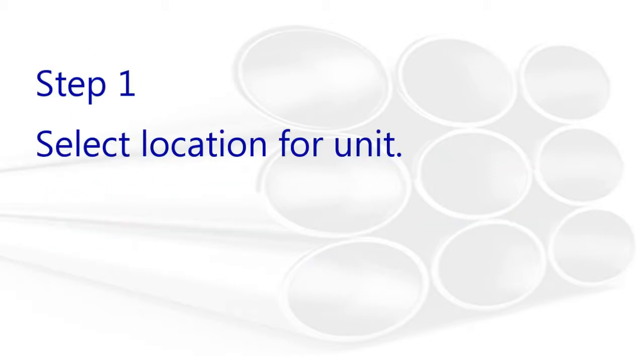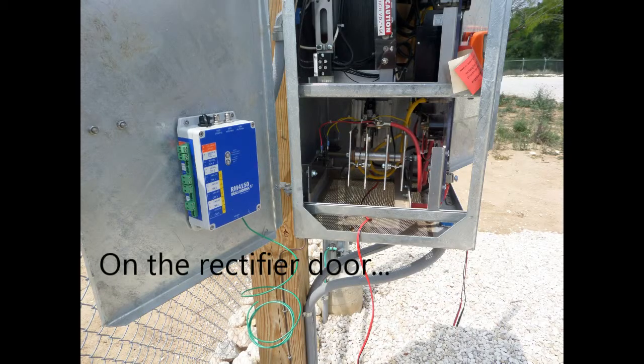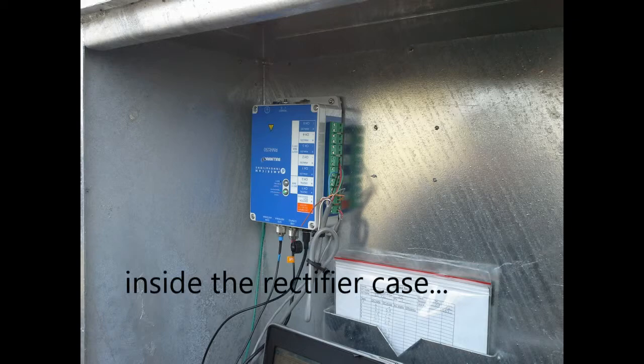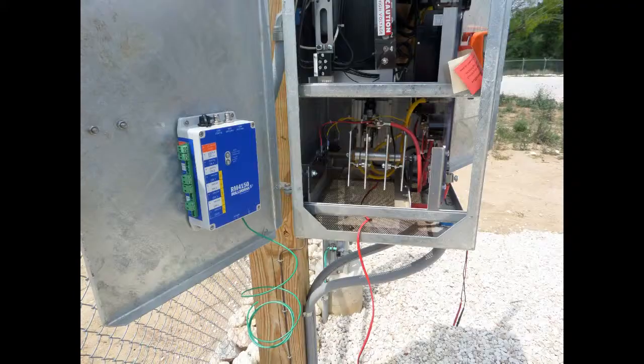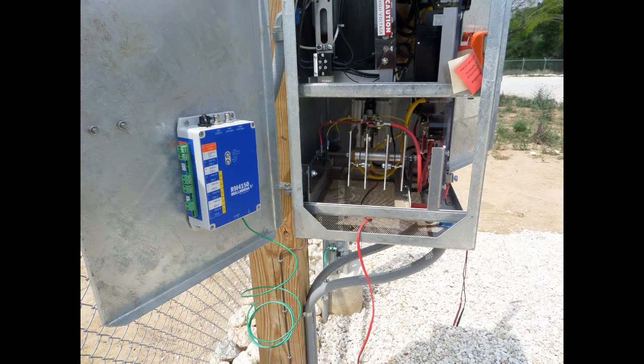Select a location where the unit will be mounted or placed. This may be on the rectifier door or on a wall inside the case or in an available space inside the rectifier. Be sure that the location is easy to get to in order to access the unit if necessary. The unit can be mounted with the included magnetic feet or attached to a rectifier wall using mounting hardware.